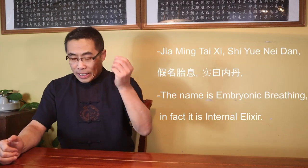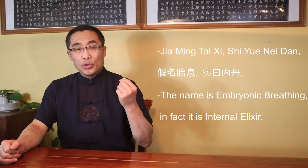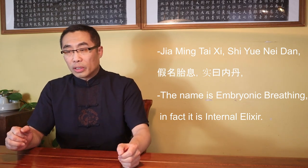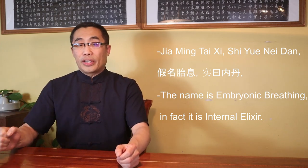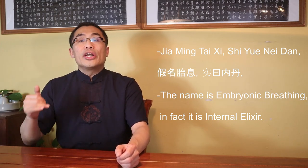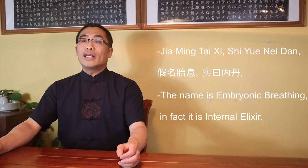So, what is the nature of Tai Xi? Well, simply speaking, according to the Daoist poem Tai Xi Ming, or embryonic breathing poem, it says, I quote: Jia Ming Tai Xi, Shi Yue Nei Dan. End quote. Translation: the name is embryonic breathing, in fact, it is internal elixir. End translation. Therefore, according to the poem Tai Xi Ming, Tai Xi is the internal elixir practice or the result of Xiu Dao.